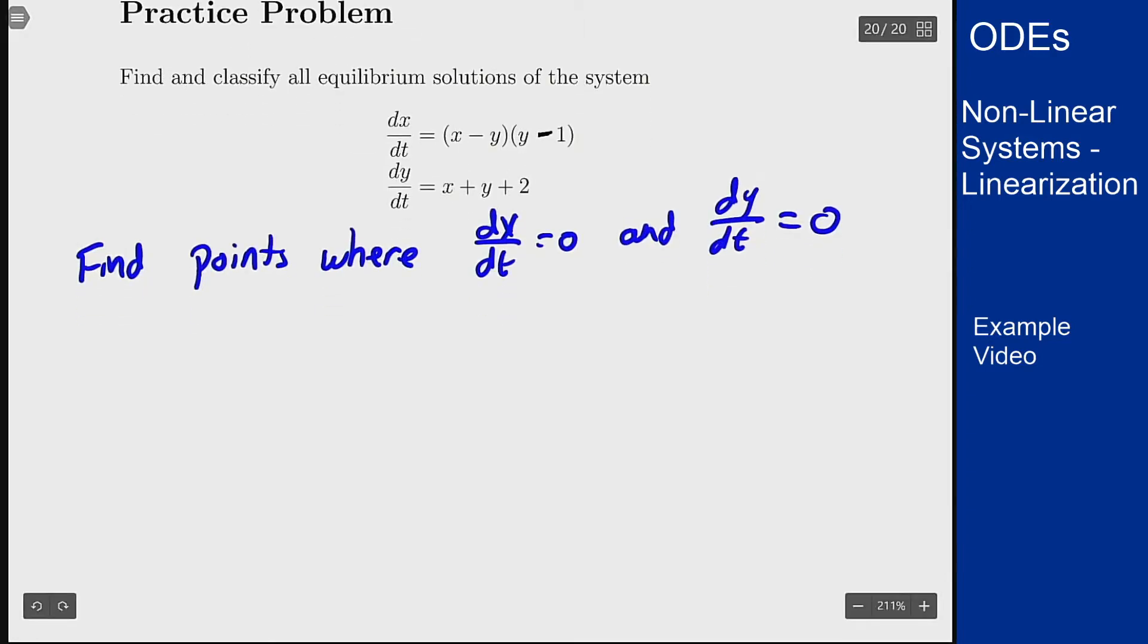In the dx/dt equation we see two factors so this can happen either when x equals y or when y equals 1. There's only one factor for the dy/dt equation so for that to happen we need x plus y to equal negative 2.